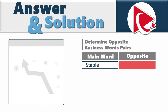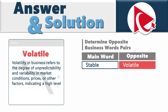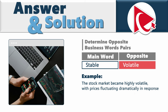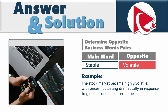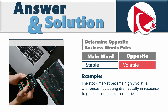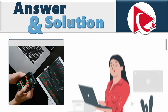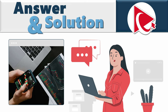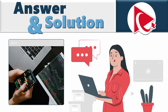The opposite of strategic is tactical — in business, tactical relates to carefully planned actions to achieve short-term goals or respond to immediate challenges. Example: 'The marketing team implemented a tactical campaign to boost sales during the holiday season.' The opposite of stable is volatile — referring to unpredictability and variability in market conditions. Example: 'The stock market became highly volatile, with prices fluctuating dramatically in response to global economic uncertainties.' Did you come up with any different alternatives? Please share them in the comments.